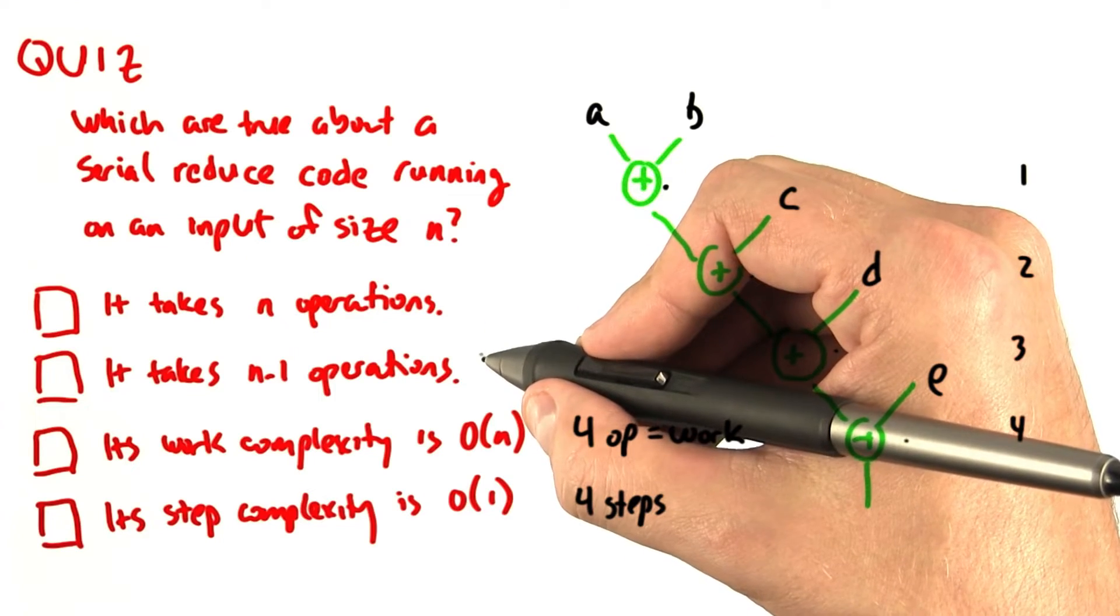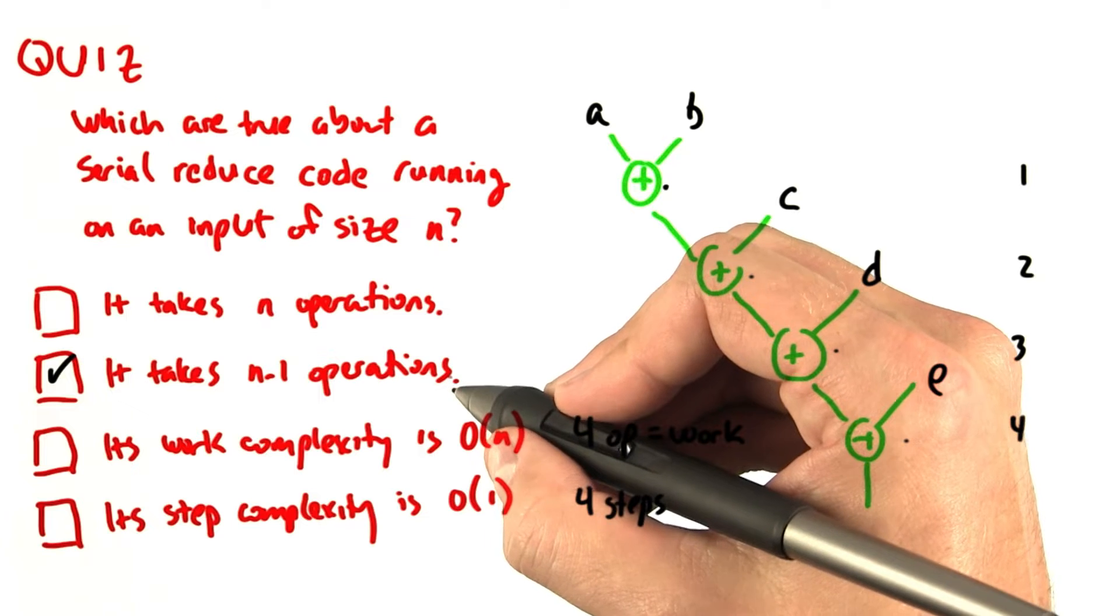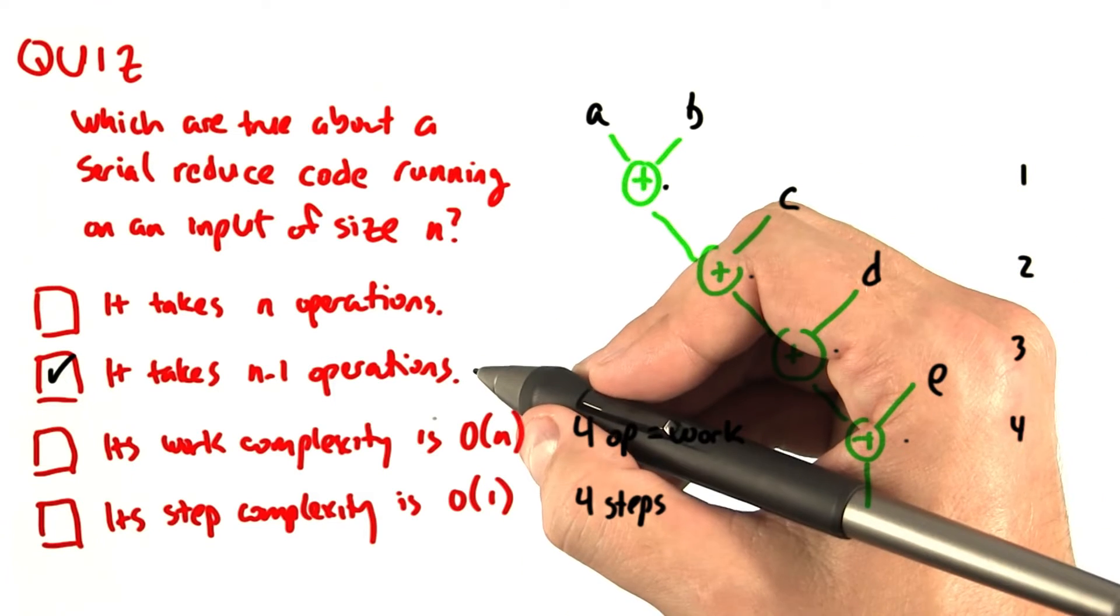So the first two are talking about the amount of work, and the correct answer is it takes n minus 1 operations. To add up n elements takes n minus 1 adds.